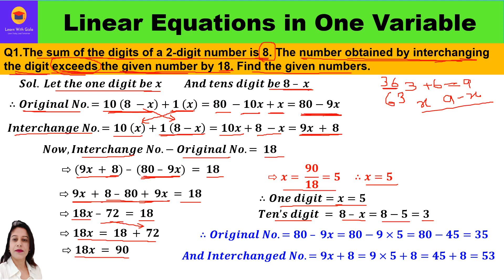Now we find the original number and the interchange number. The original number is 80 minus 9x, so 80 minus 9 into 5 is 80 minus 45, which equals 35. The interchange number is 9x plus 8, which is 9 into 5 plus 8, equals 45 plus 8, equals 53. So the original number is 35 and the interchange number is 53.